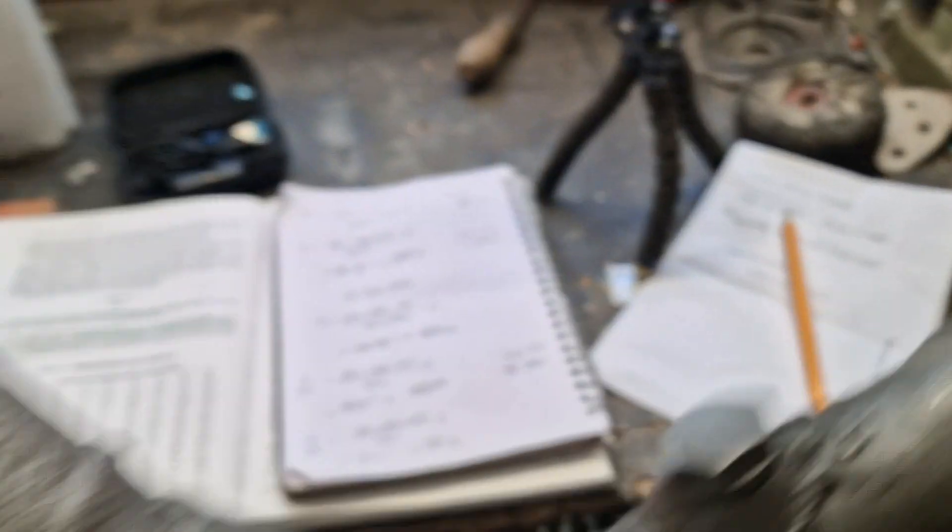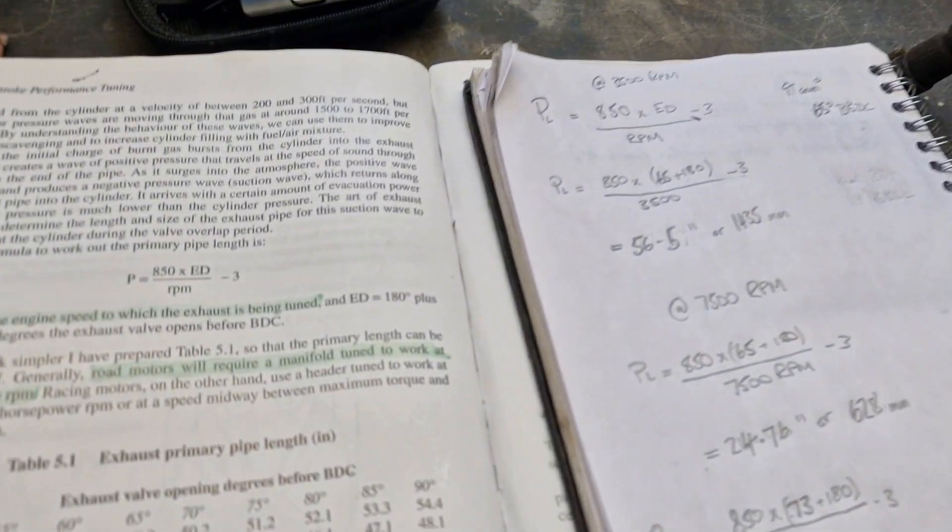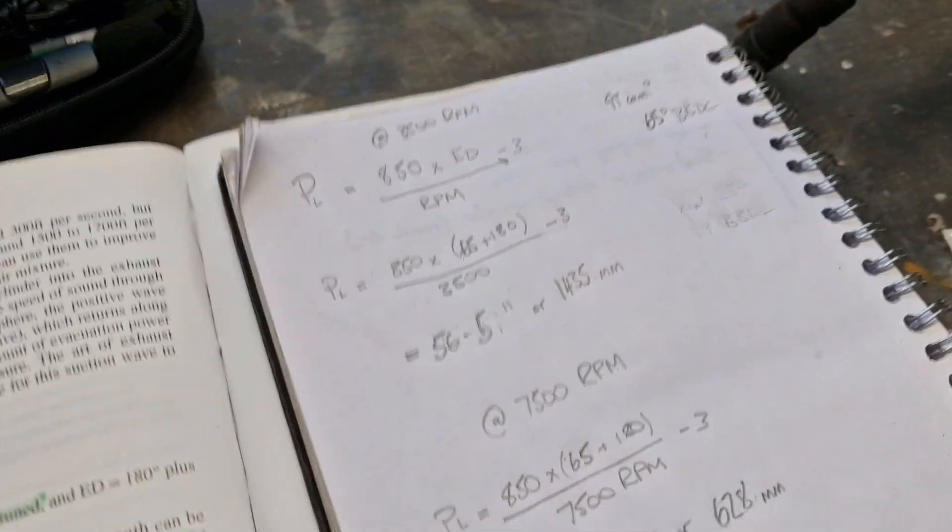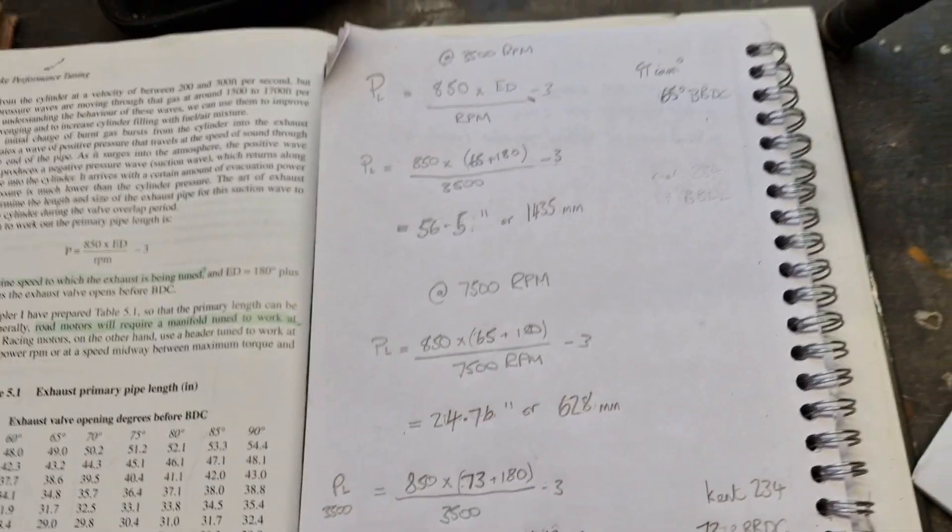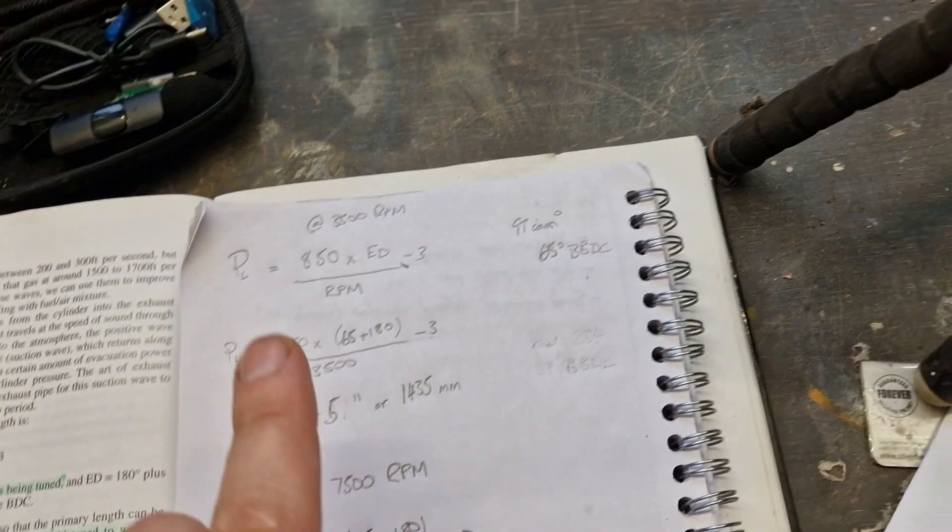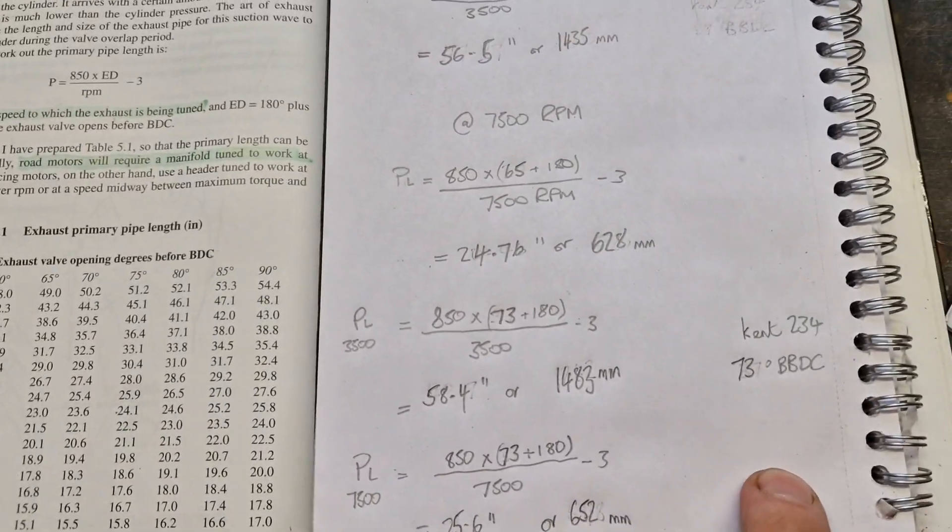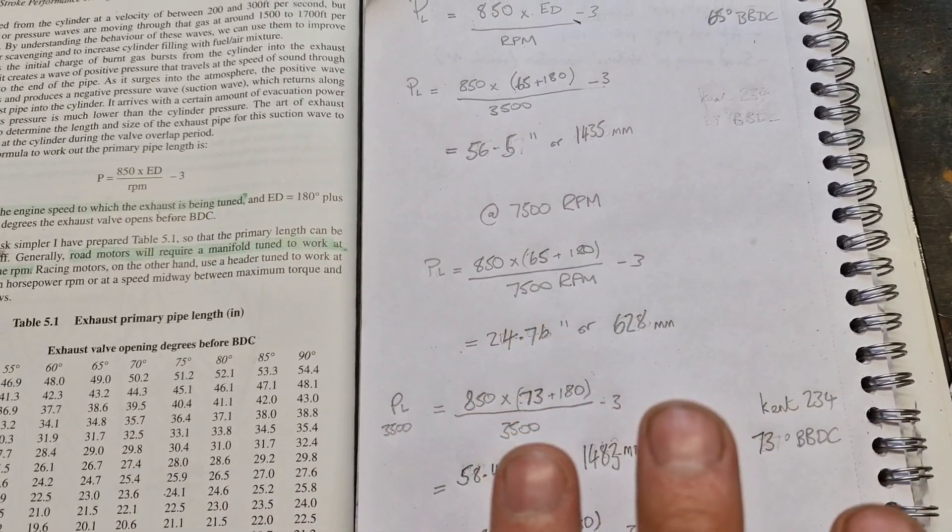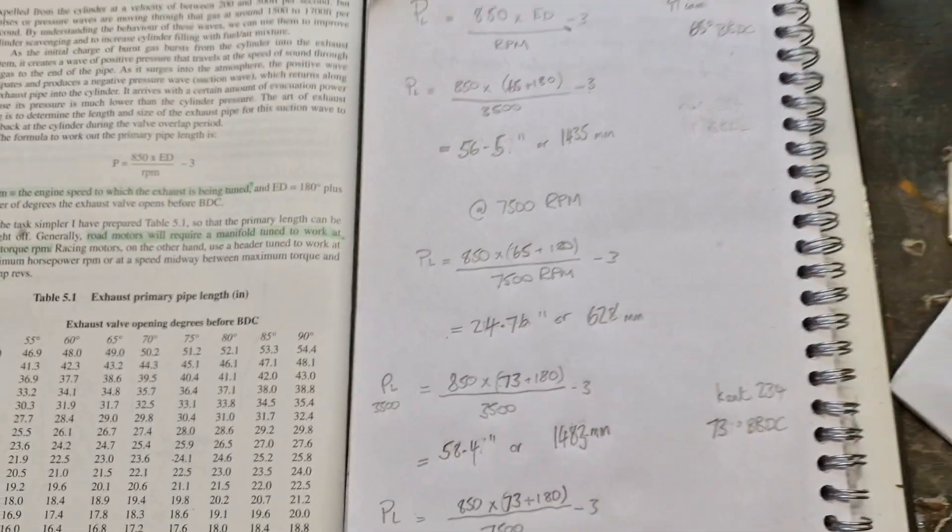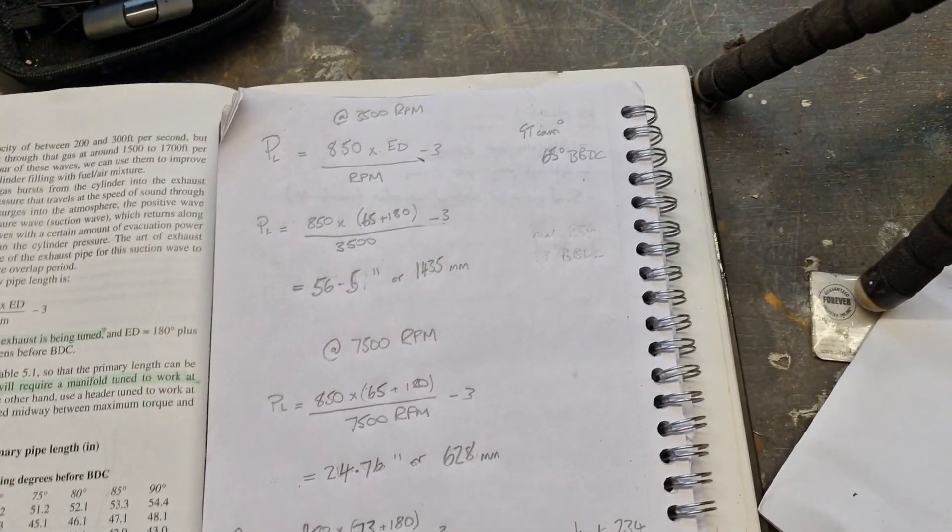I've done two working examples of this and that is for the GT camshaft and the Kent 234, which is like the lairiest road camshaft you'd want to use. From my testing I did...